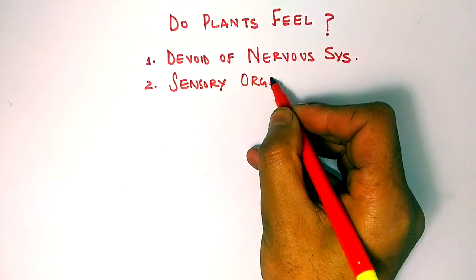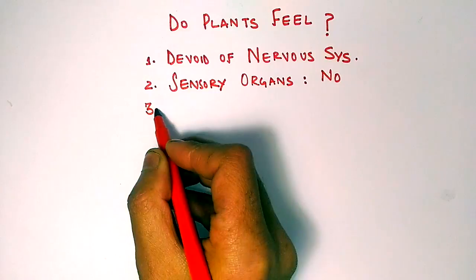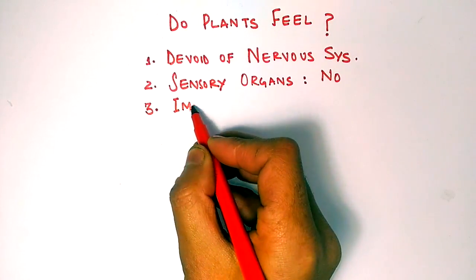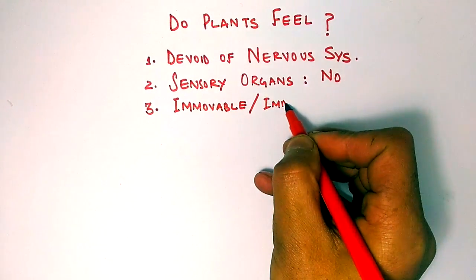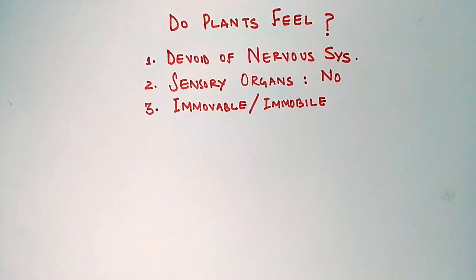There are no sensory organs, nothing present in plants. Third one is they are immobile or we can say immovable—they cannot move from one place to another place. They don't have any locomotory organs.